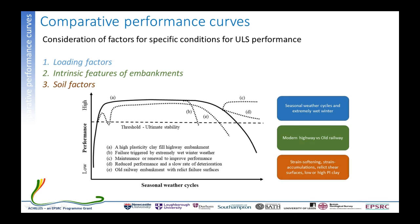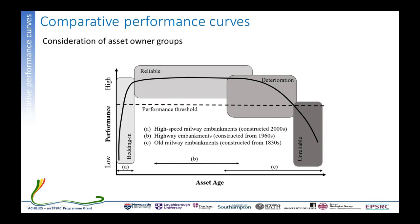Knowing this, we can map different UK assets onto these curves using the bedding-in, reliable, deterioration, and unreliable stages. High-speed railway embankments, not yet 20 years old, may still be in the bedding-in zone improving in performance. Highway embankments, approaching 60 years old, are likely in the reliable stage but some may start to deteriorate. Many old National Railway Network embankments are very old and could be in various states from reliable through to unreliable. Knowing asset age lets us prioritize maintenance.